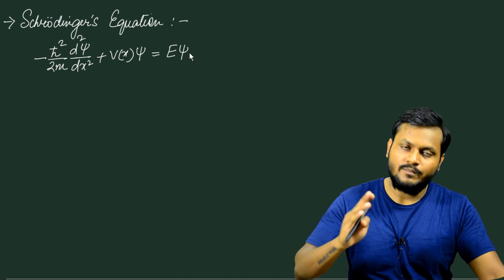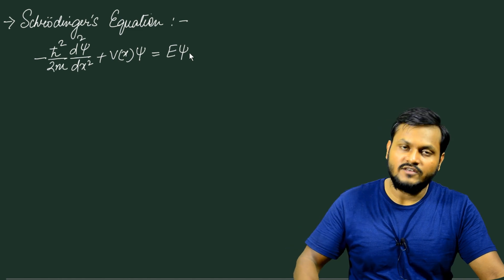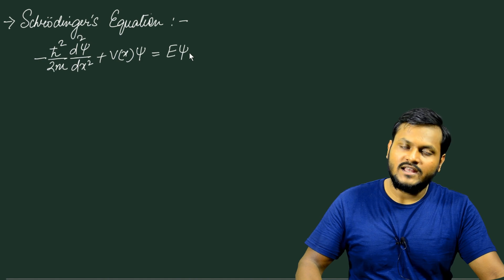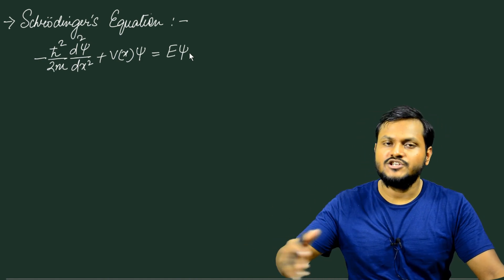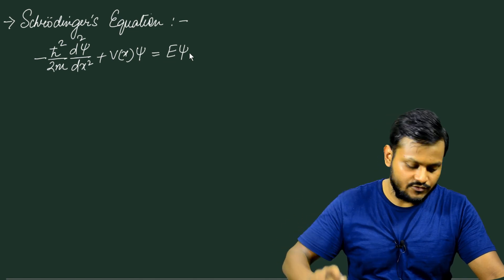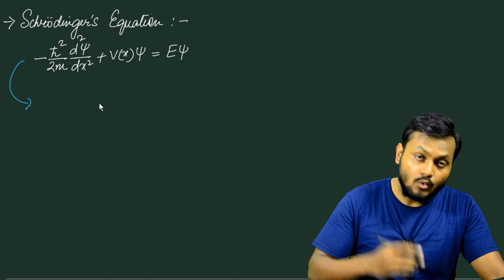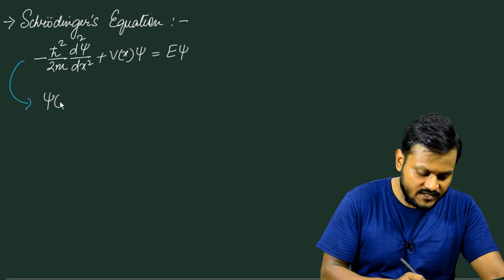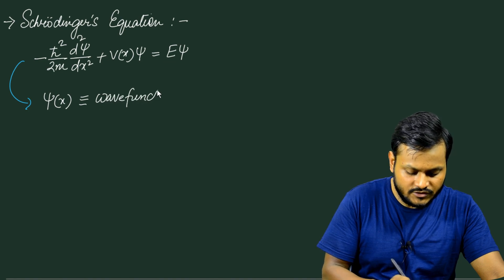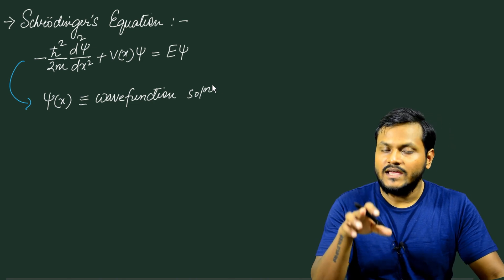In quantum mechanics, one of the foundational pillars is the Schrödinger's equation. This equation contains all the information about the nature of motion of a particle — its position, momentum, energy, etc. The solution of this Schrödinger's equation is known as the wave function solution, represented by psi(x). The equation I have written here is the time-independent equation, but what I'm going to talk about is equally valid for the time-dependent equation.